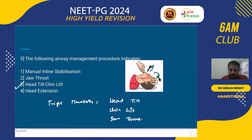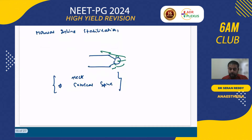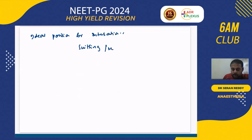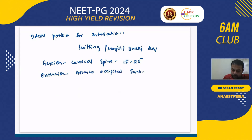The ideal position for intubation is the sniffing position, also called McIntosh or barking dog position — flexion of the cervical spine 15 to 25 degrees, with extension at the atlanto-occipital joint 75 to 85 degrees. These are very important points to remember.